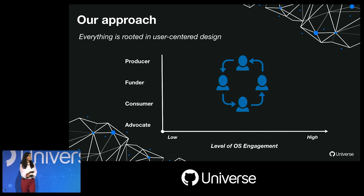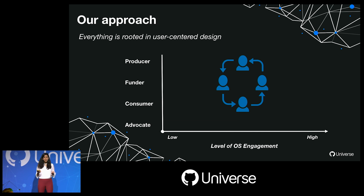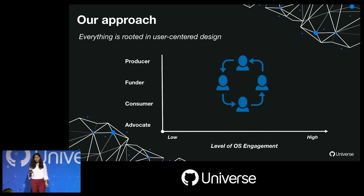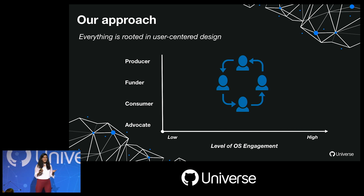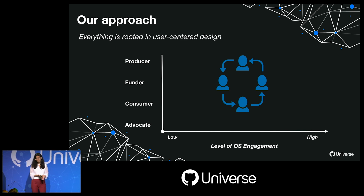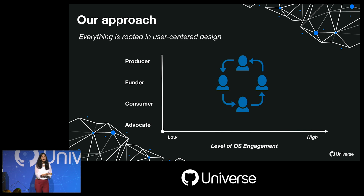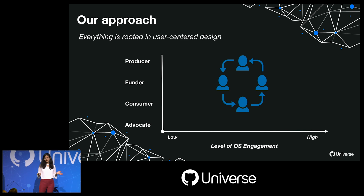Our approach is rooted in human-centered, user-centered design, which means we're putting users and stakeholders at the center to understand their engagement with technology in the social sector. We bucketed users into three or four types: producers — so developers of software, which includes developers, product managers, designers — consumers of software who use it for their social sector purposes, and funders of technology. Of course, there's overlap between these roles.